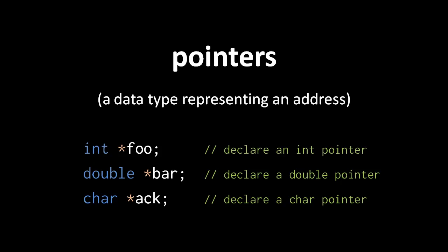To declare a pointer, we use asterisk like a modifier on the base type. This syntax can be very confusing, especially when we introduce some complications later. For clarity, I'll display asterisks denoting a pointer declaration in orange to distinguish them from other uses of asterisk.